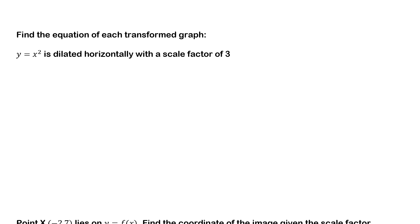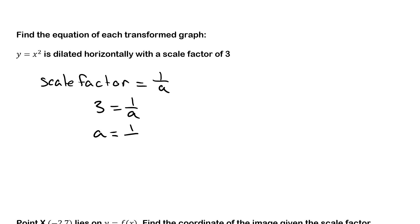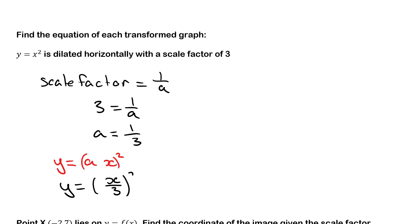Find the equation of each transformed graph. y equals x squared is dilated horizontally with a scale factor of 3. We know the scale factor is 1 over a, so if 3 equals 1 over a, then a must equal 1 over 3. We substitute this into the formula — remember y equals f(ax), so the transformed graph is y equals (x over 3) squared.